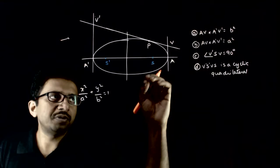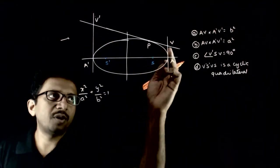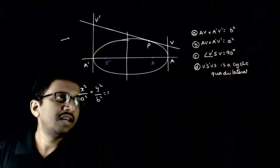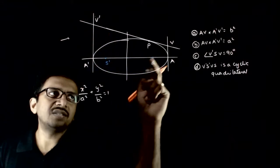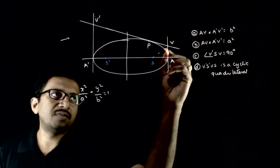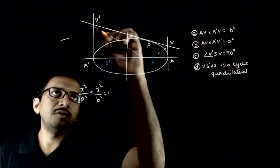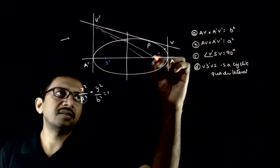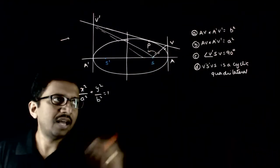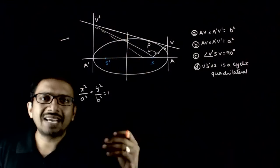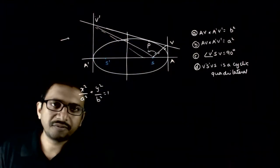The first two options deal with the product of AV and A dash V dash — what is the product of these two lengths? The third option deals with the angle VSV dash — whether this angle is 90 degrees or not. And the fourth option deals with the cyclic properties of V, S, S dash, V dash.